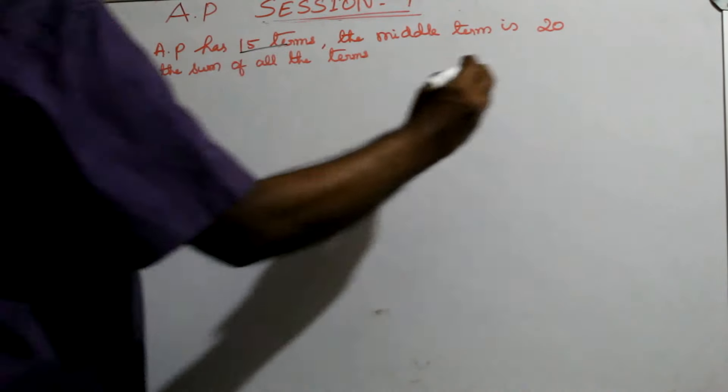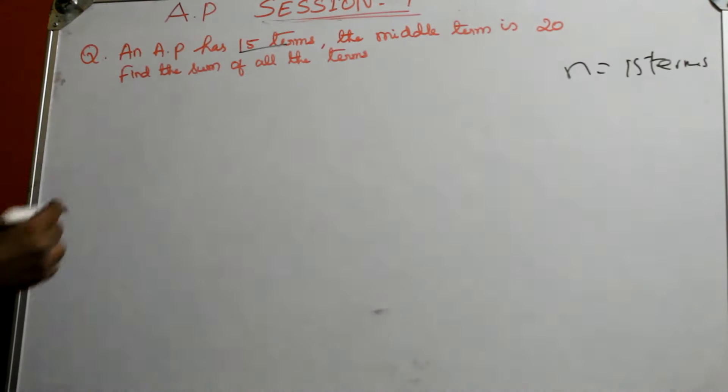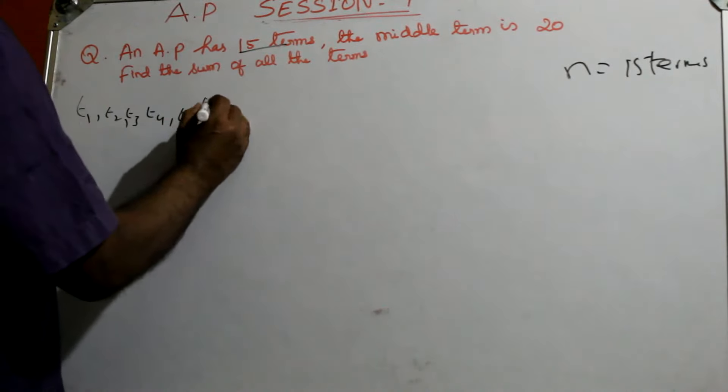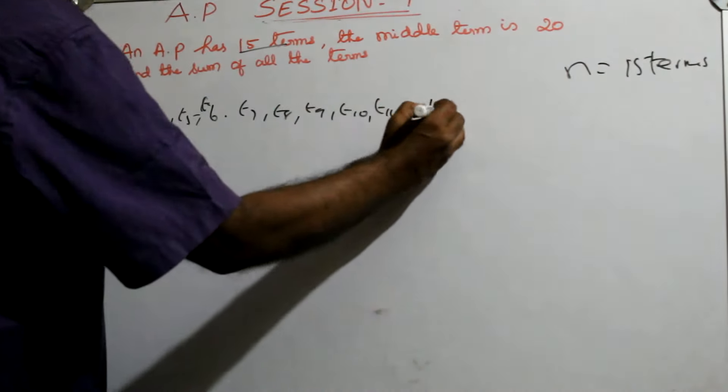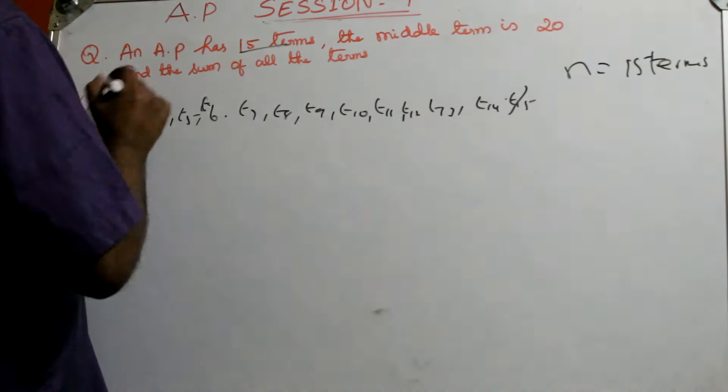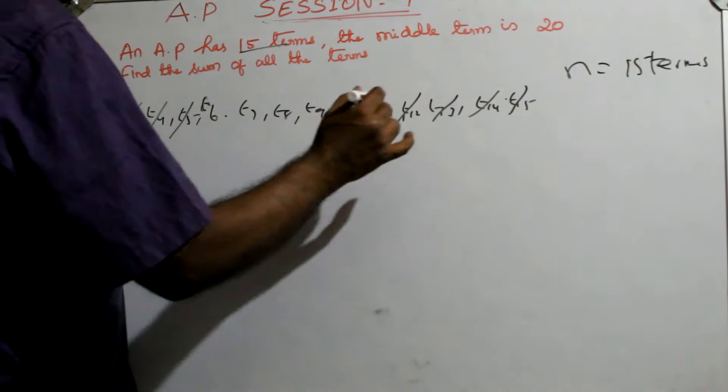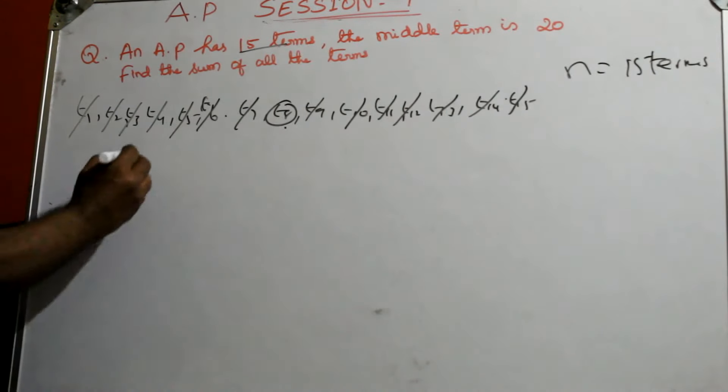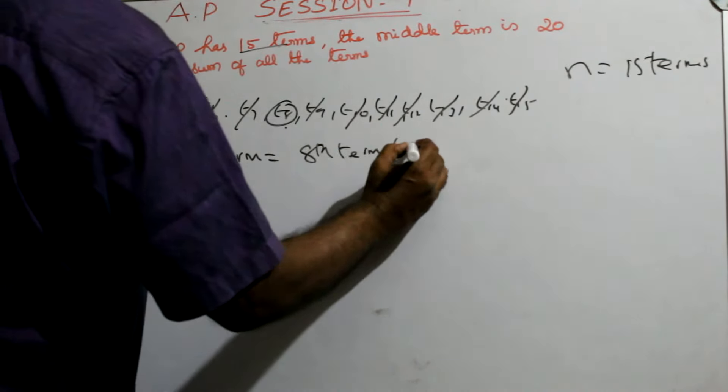An AP has 15 terms. So you got n is equal to 15 terms. So 15 terms means like this: T1, T2, T3, T4, T5, T6, T7, T8, T9, T10, T11, T12, T13, T14 and T15. So middle term means cancel this, cancel this, cancel this. Just like that you can find the middle term. But there is one more method also. That also you can follow.